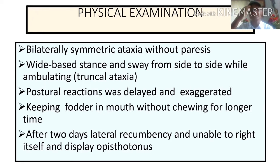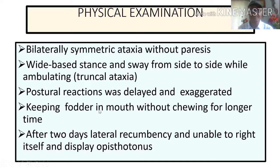During physical examination we noted the animal was suffering from bilaterally symmetric ataxia without paresis, wide base stance, and swaying from side to side while ambulating — that is known as truncal ataxia. Neurological examination showed delayed and exaggerated postural reactions. The animal was keeping fodder in its mouth without chewing for a long time. After two days of lateral recumbency, the animal was unable to right itself and also displayed opisthotonus.